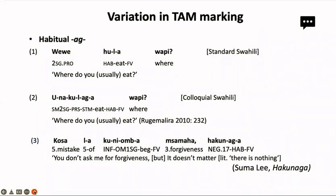We're going to examine variation in four main parameters for which we already have some preliminary data. The first is variation in tense and aspect marking, particularly in the use and non-use of the AG tense marker. We found a lot of variation regarding the use of this marker between standard Swahili and colloquial Swahili. In standard Swahili the AG would usually be left out — as in 'upali wapi' — while in colloquial Swahili we use the AG marker, as in 'unapulaga wapi' — 'where do you usually eat?'